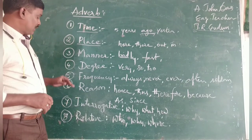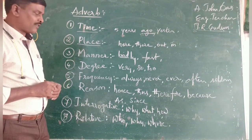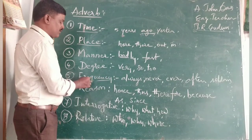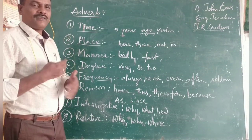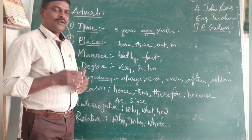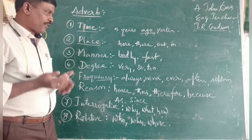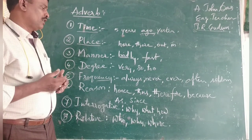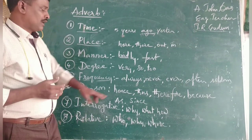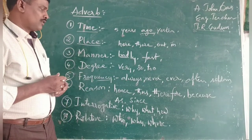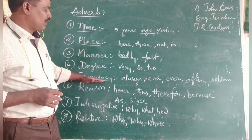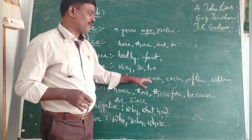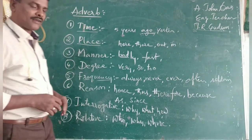The fifth one is adverbs of frequency. Frequency means how often you are using something, how seldom you are using it, or whether you are using it always. These kinds of words are known as adverbs of frequency: always, never, ever, often, seldom, etc.